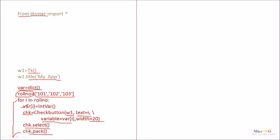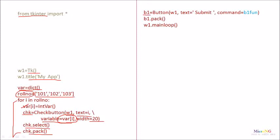Since we have three roll numbers in the dictionary roll_number, three CheckButtons will be created. Each CheckButton is associated with an access variable named var, which is a dictionary, so var[i] stores the status of the CheckButton — whether it is selected or not. After that, a Button is created with the object name v1, associated to a function named v1_function. The button is placed on the screen and the mainloop method is called for event handling.